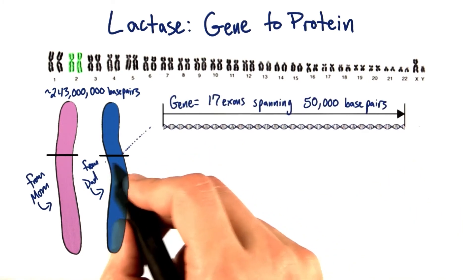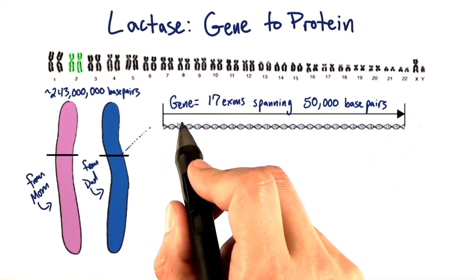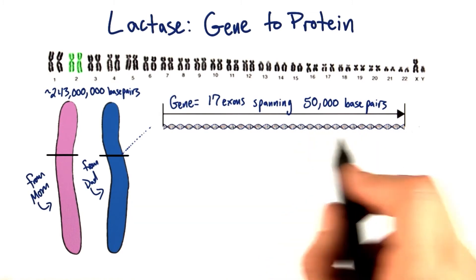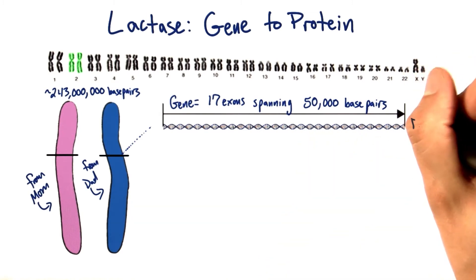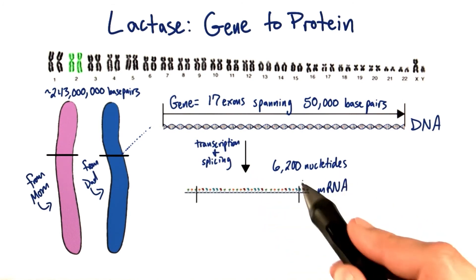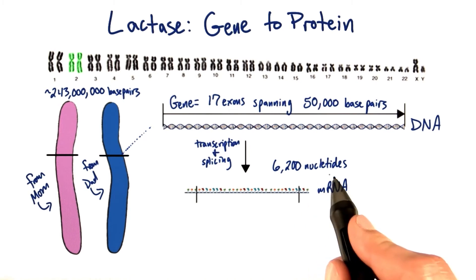If we were to zoom into this region on chromosome two to look further at the lactase gene, we'd see that it's actually composed of about 17 exons spanning more than 50,000 base pairs of DNA. After transcription and splicing, removing all the introns that can be found in this gene, we're left with about 6,200 nucleotides of an mRNA copy of the lactase gene.